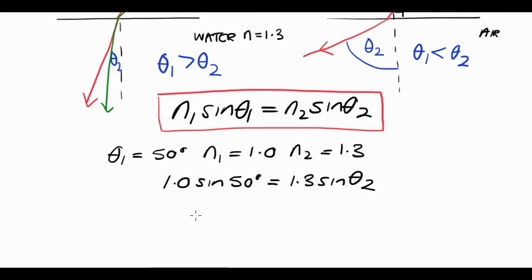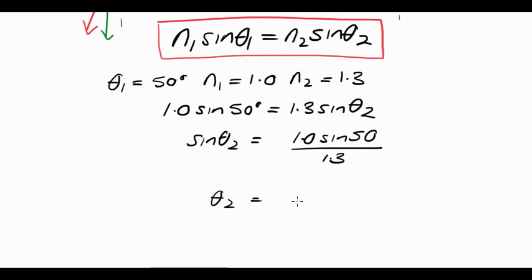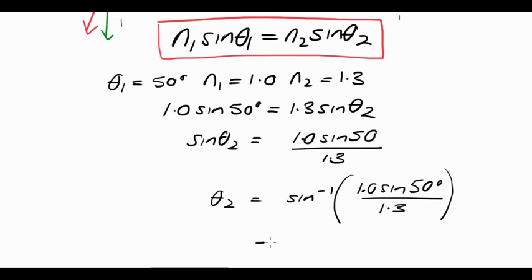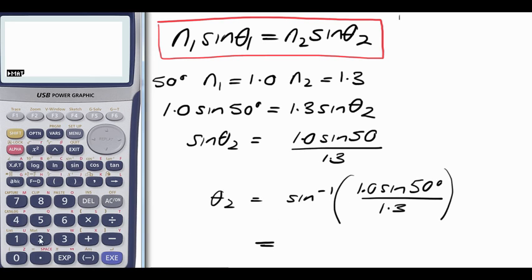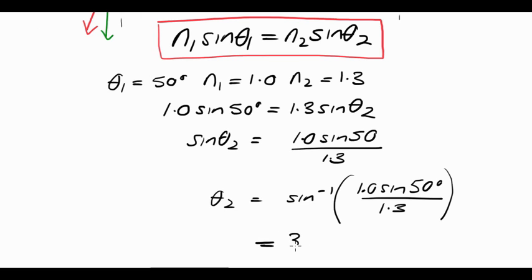Rearranging, sin theta 2 equals 1.0 sin 50 divided by 1.3. Which means theta 2 is the inverse sin of (1.0 sin 50 degrees divided by 1.3). Doing this in the calculator — inverse sin of sin 50 divided by 1.3 — make sure your calculator is set to degrees, otherwise you might get the wrong answer. This gives us an angle of refraction of 36 degrees.